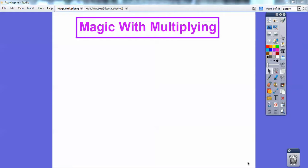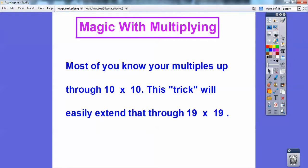Hey folks, Mr. Math Blog here. This is multiplying two-digit numbers beyond 10 × 10, all the way up to 19 × 19. Most of you know your multiples up through 10 × 10, and this trick will show you an easy way that extends you all the way up through 19 × 19.